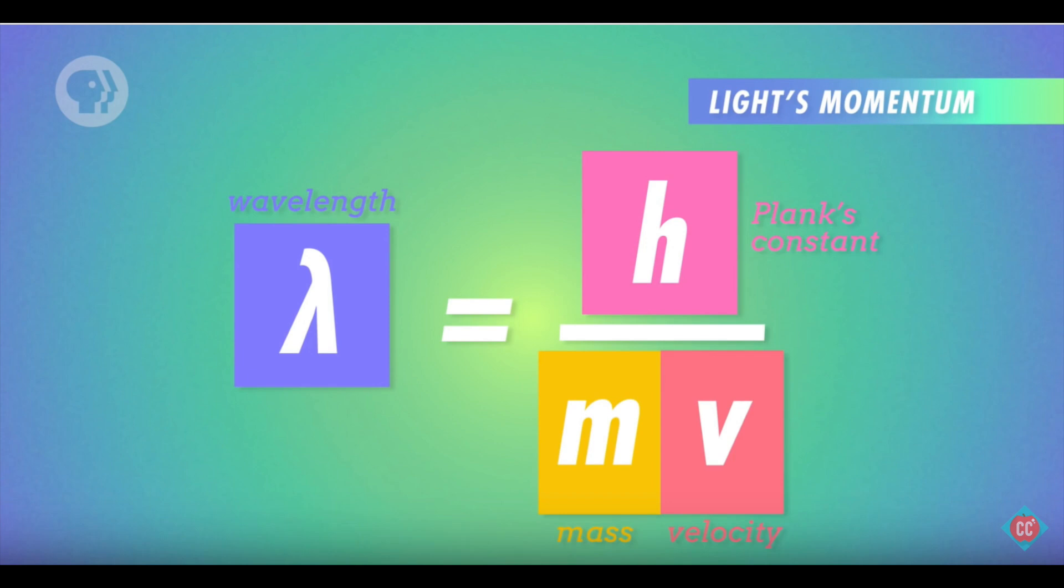He stated that with every particle of matter, with mass and velocity, a real wave must be associated. The de Broglie wavelength equation related wavelength to a moving particle and the equation is as follows: wavelength equals Planck's constant divided by mass times velocity.